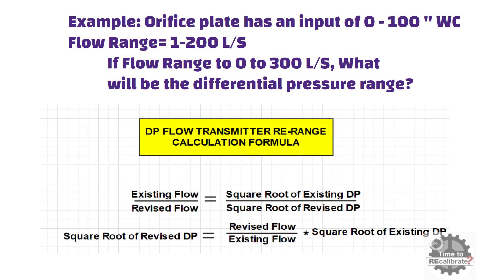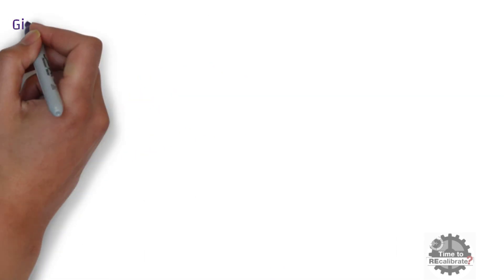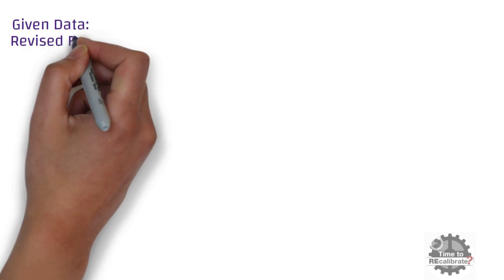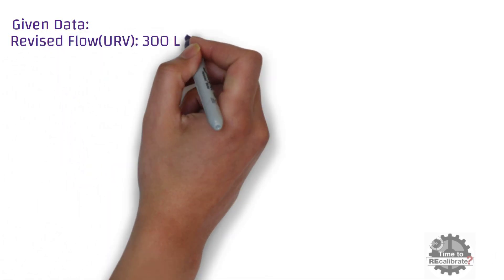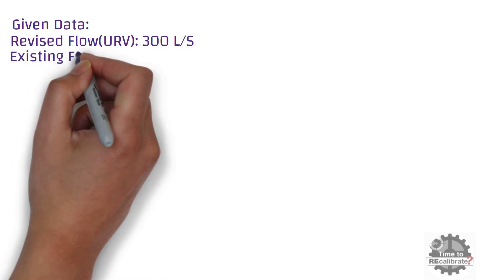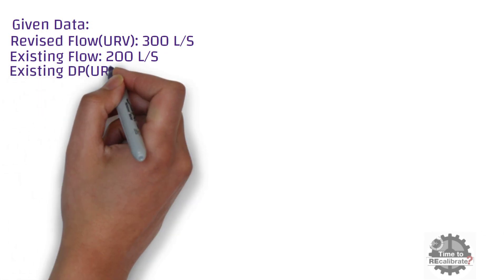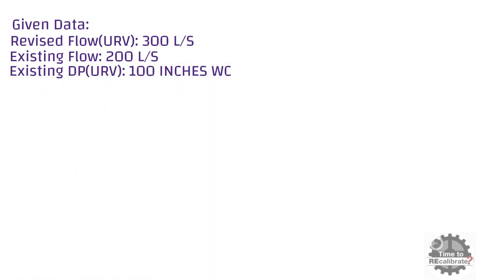As you can see, this is a standard calculation formula to calculate differential pressure range. Let's write down the data given in this example. The revised flow upper range value is 300 liters per second, the existing flow upper range value is 200 liters per second, and the existing differential pressure upper range value is 100 inches of water column.